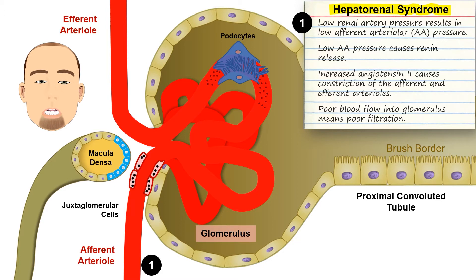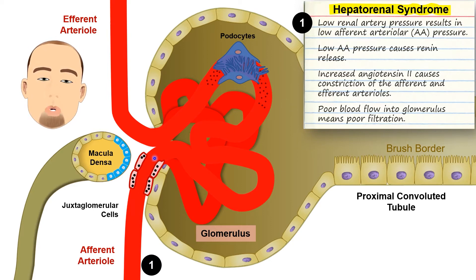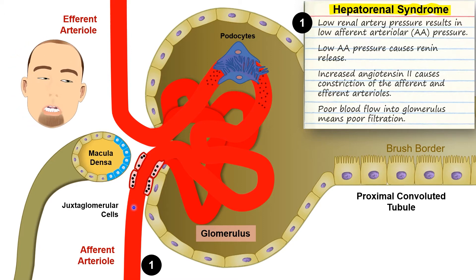The renal arteries come from the abdominal aorta and eventually branch into microscopic afferent arterioles — there are about a million of these in each kidney, one per glomerulus. Because the renal artery has low flow due to systemic hypotension, the afferent arteriole then has low pressure and low flow.